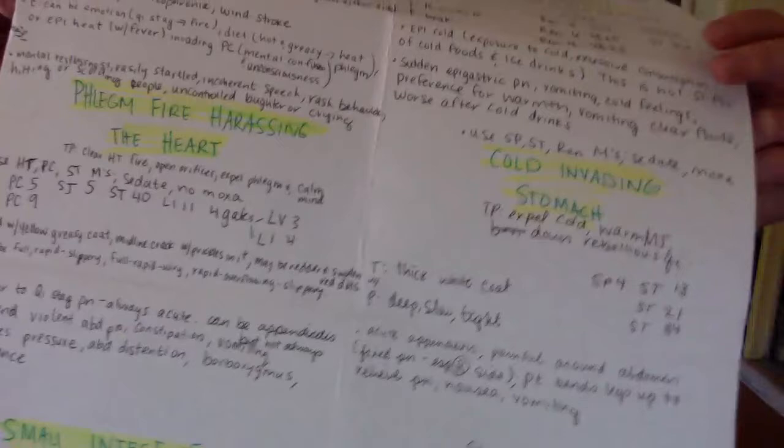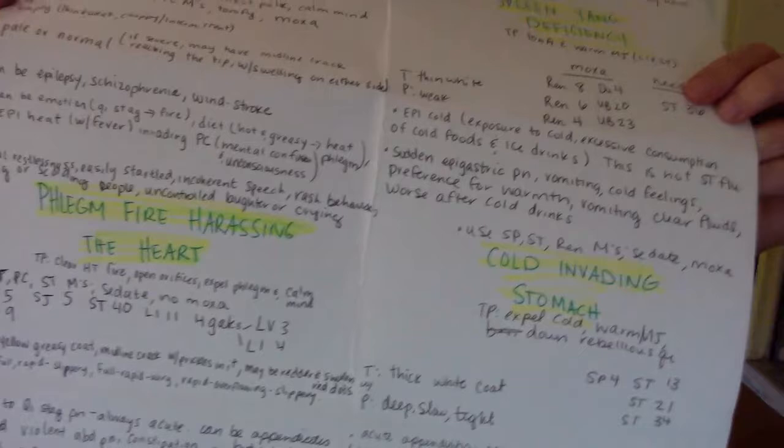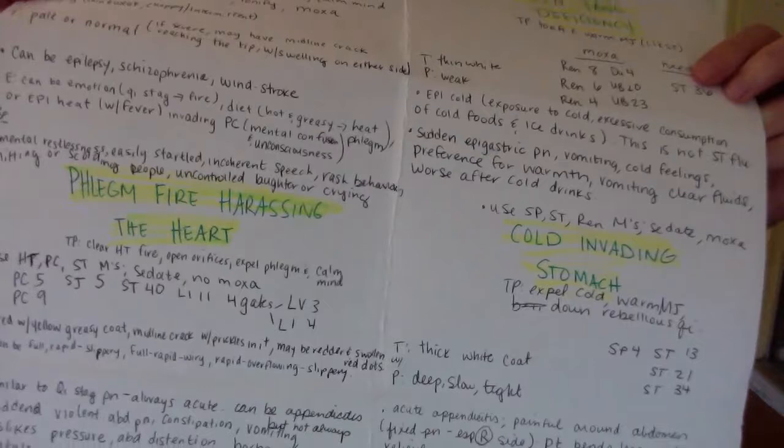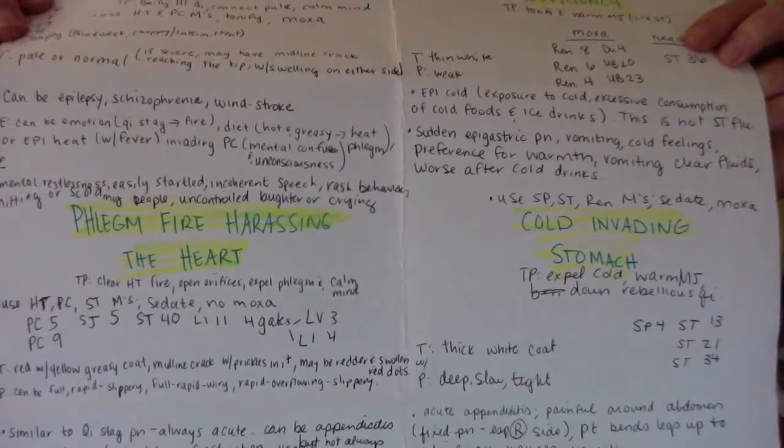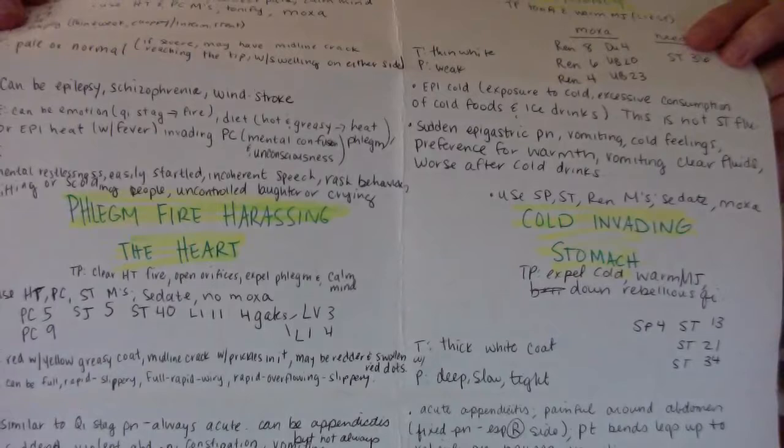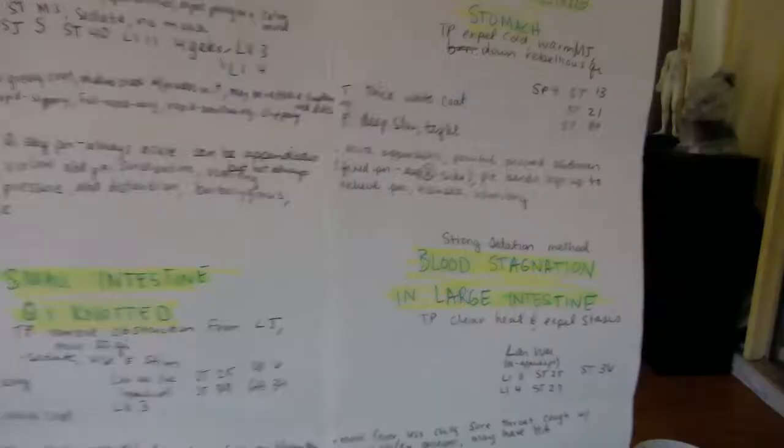Phlegm fire harassing the heart: use heart, pericardium, and stomach meridian. Sedate, no moxa. You don't want to add more heat to that fire. Points combo: Pericardium 5, pericardium 9, Sanjau 5, stomach 40, LI 11, and the four gates: liver 3 and LI 4.